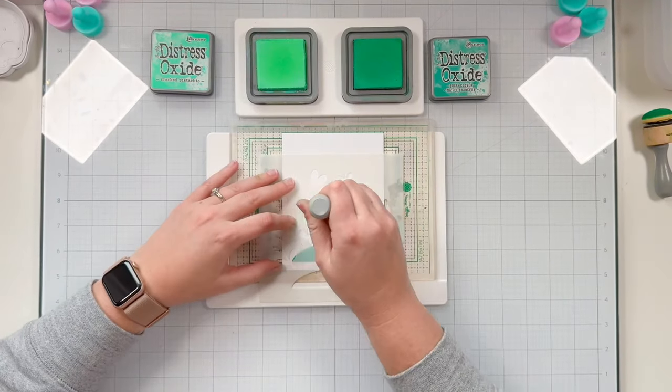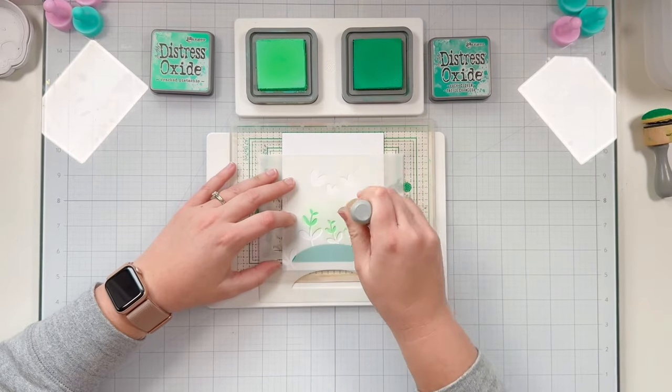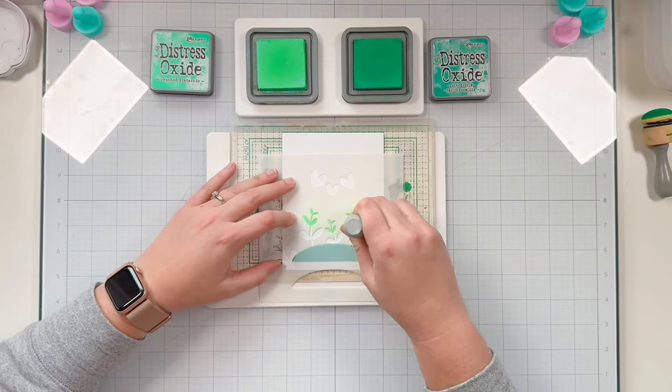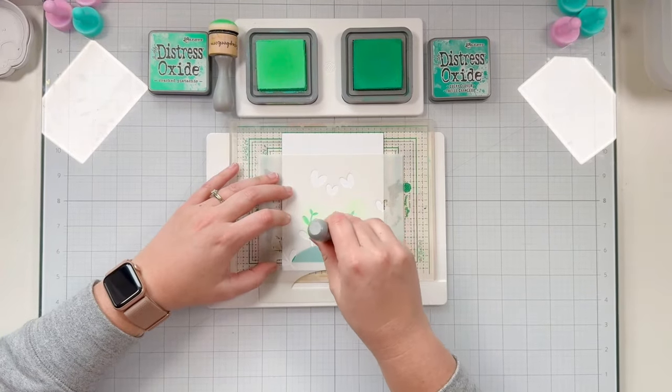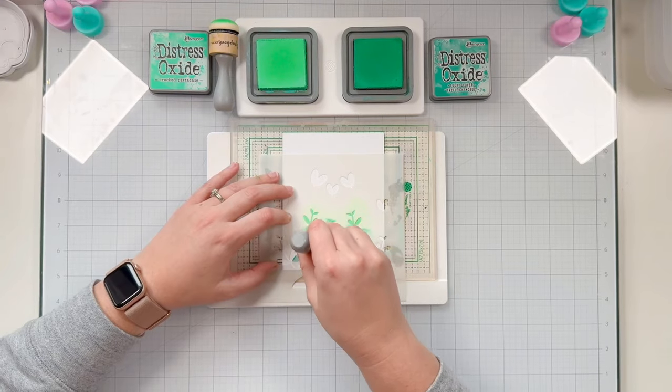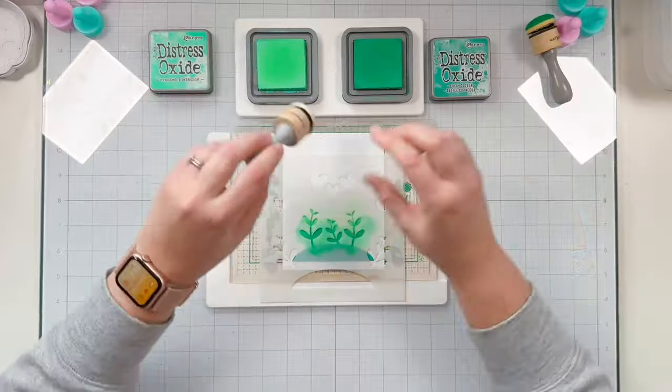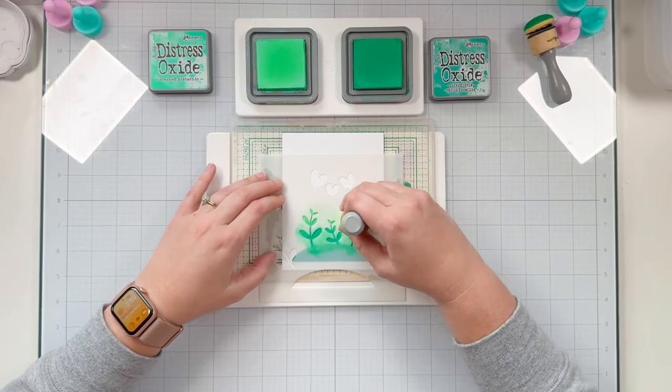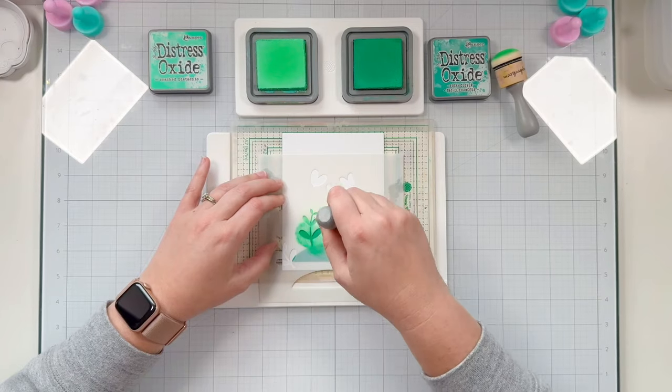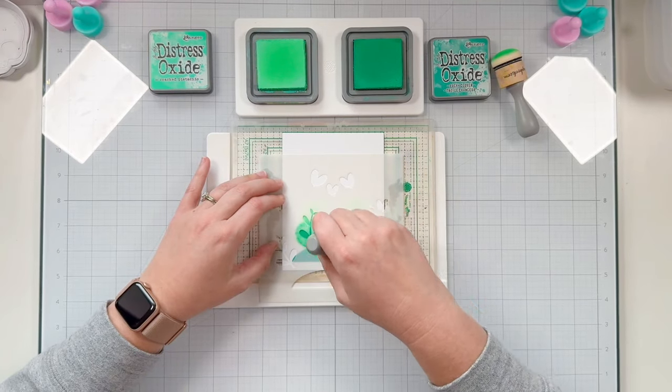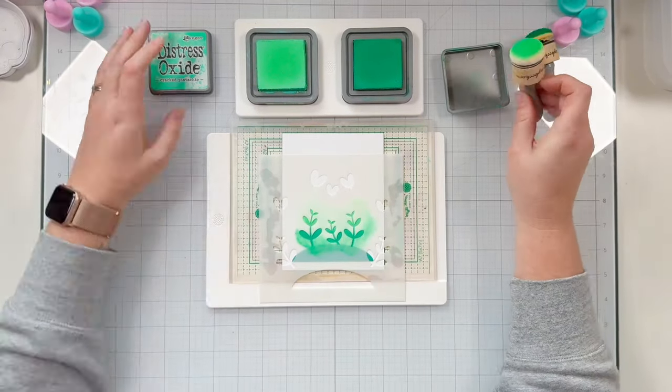I'm bringing out Cracked Pistachio and I'm going to start by adding that color at the top of my stems. I'm coloring in all three flower stems with Cracked Pistachio and then bringing in Lucky Clover at the bottom to blend those two colors together so the tops of the stems look lighter and the bottom will blend in with the hill.